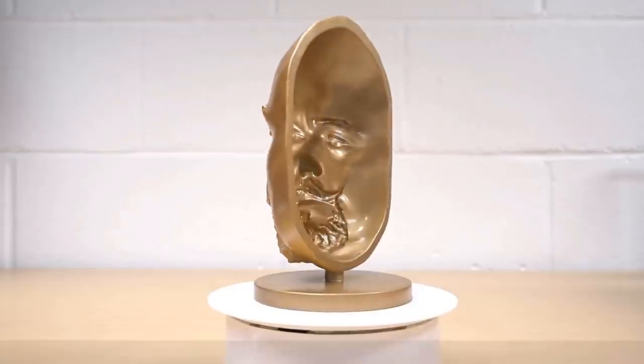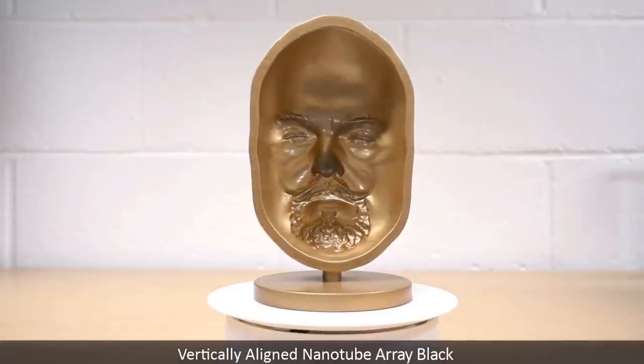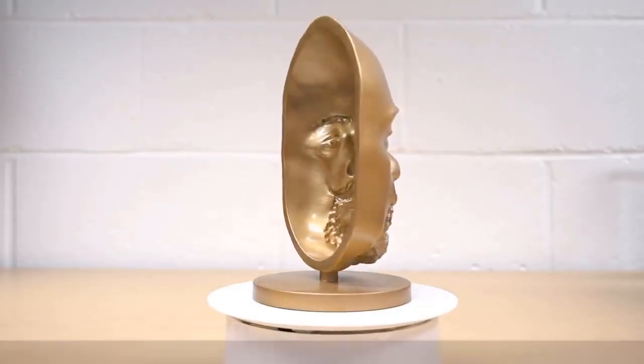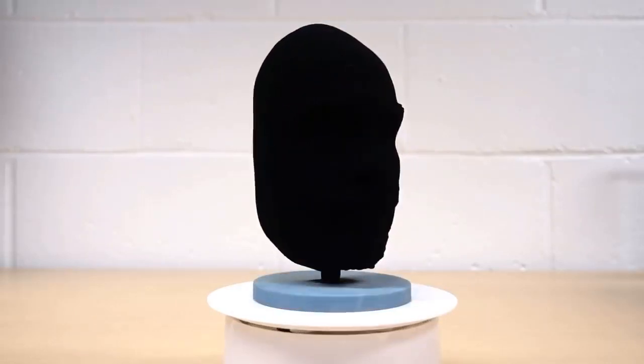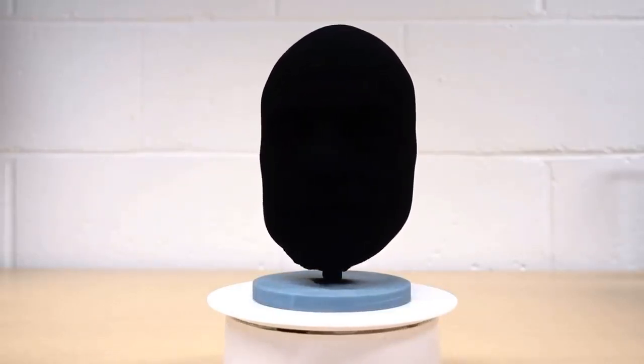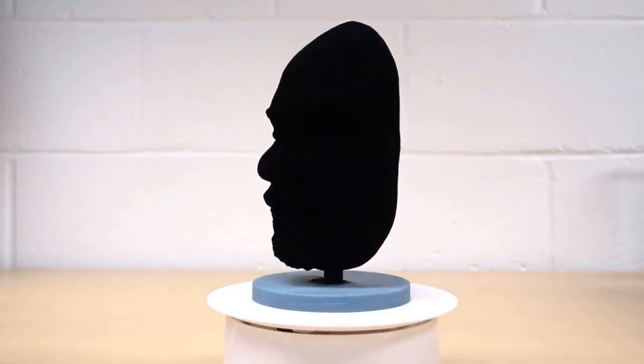The name Vantablack is an acronym for Vertically Aligned Nanotube Array Black, and Vantablack is not a color, but a material. It's made of a forest of tiny hollow nanocarbon tubes, each the width of a single atom.